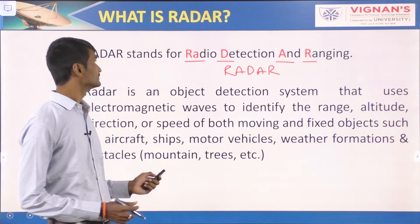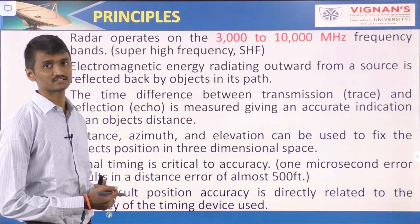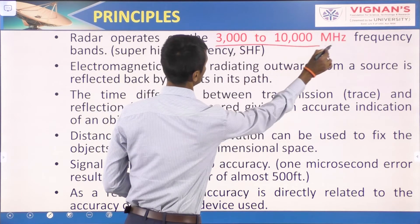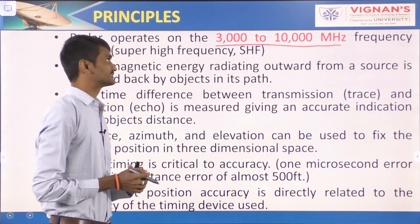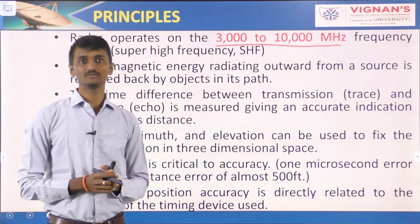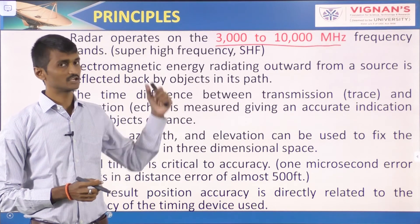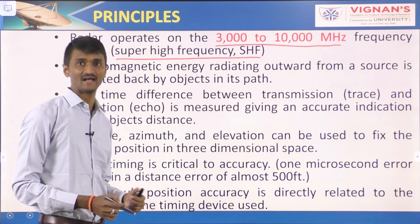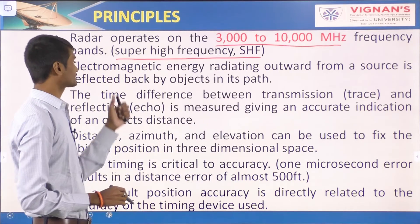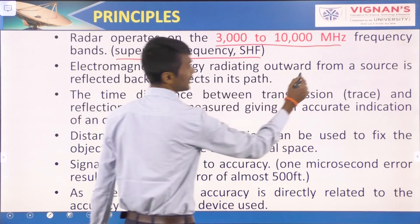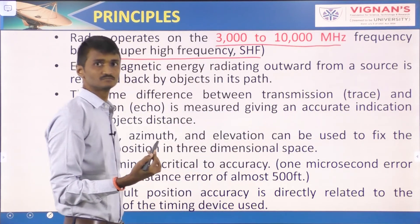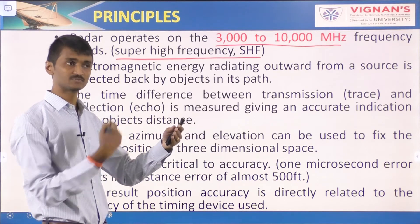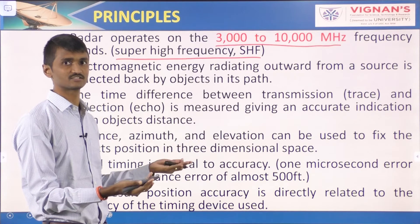The basic principles of radar: radars mainly operate on frequency bands from 3,000 megahertz to 10,000 megahertz, covering the Super High Frequency (SHF) band. Electromagnetic energy radiates outward from a source and is reflected back by objects in its path — that is, the target.